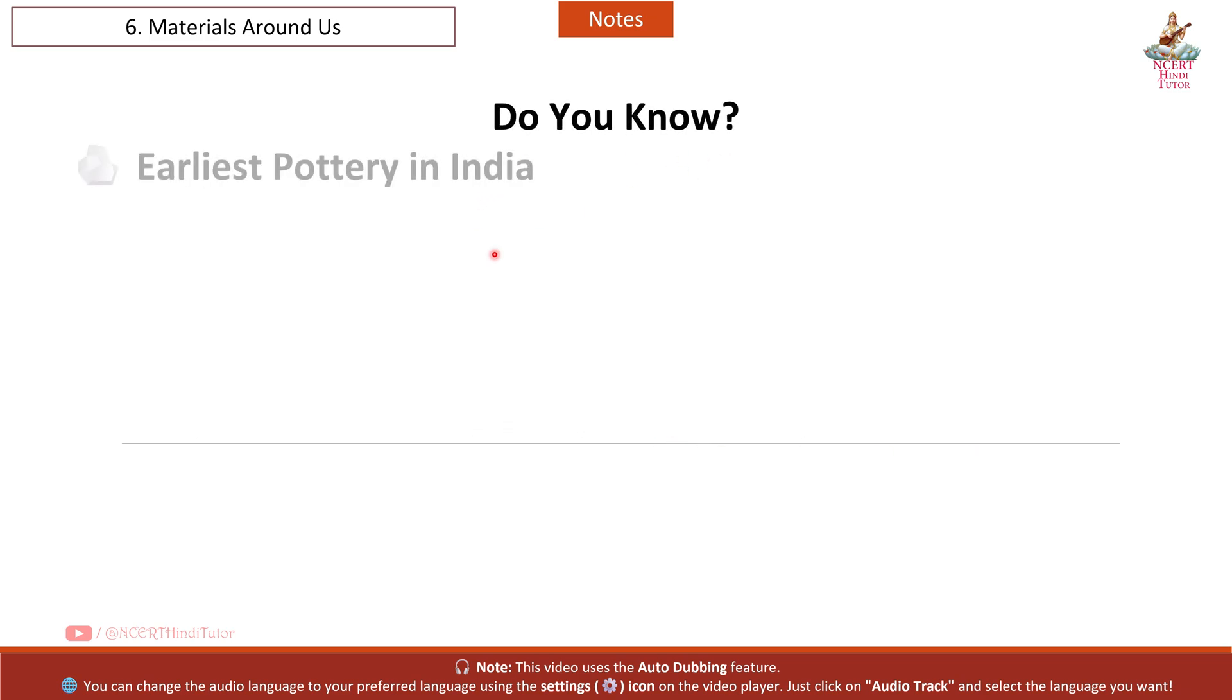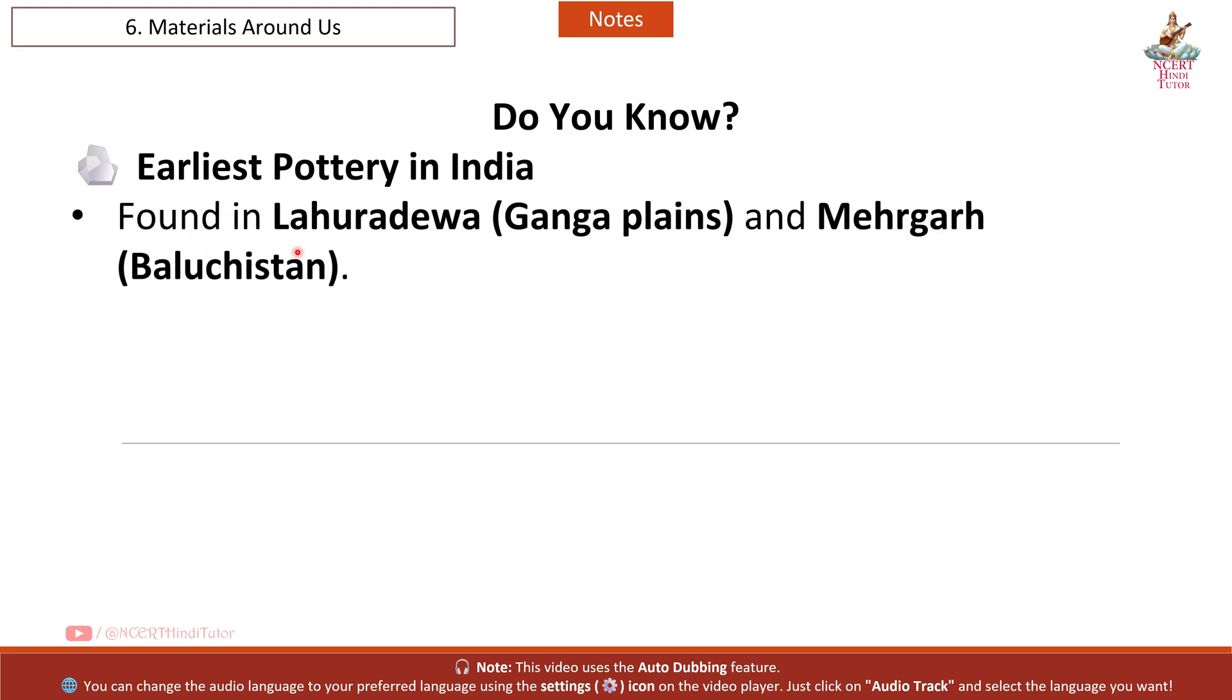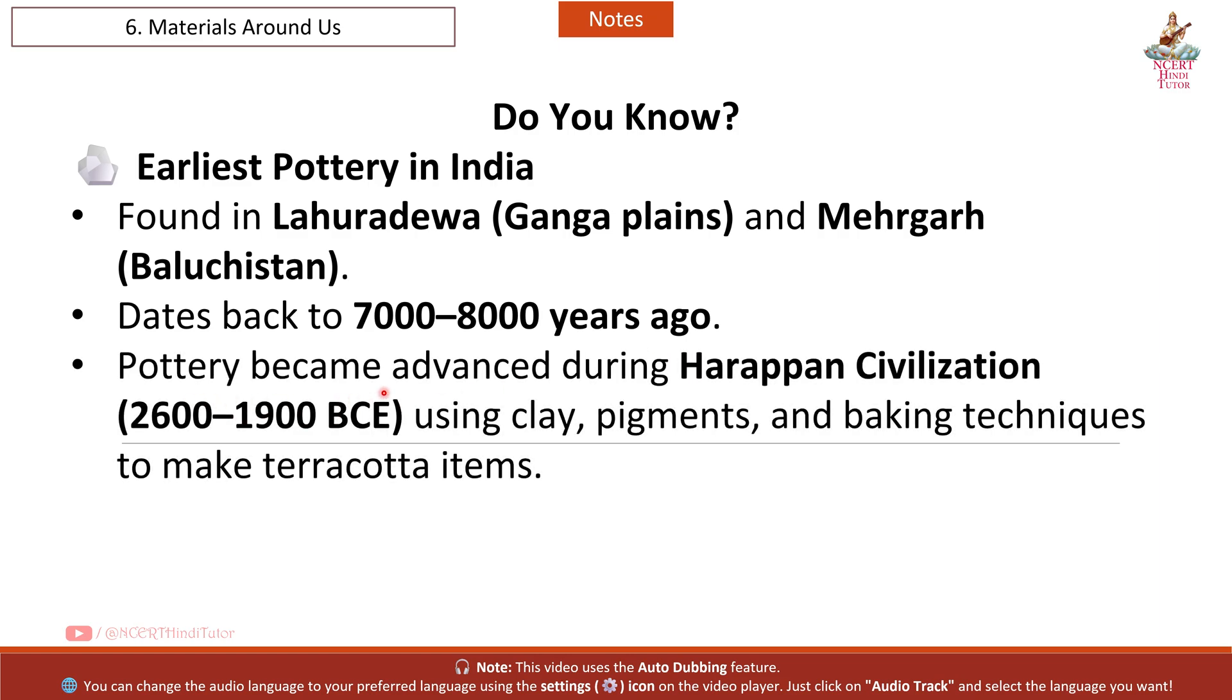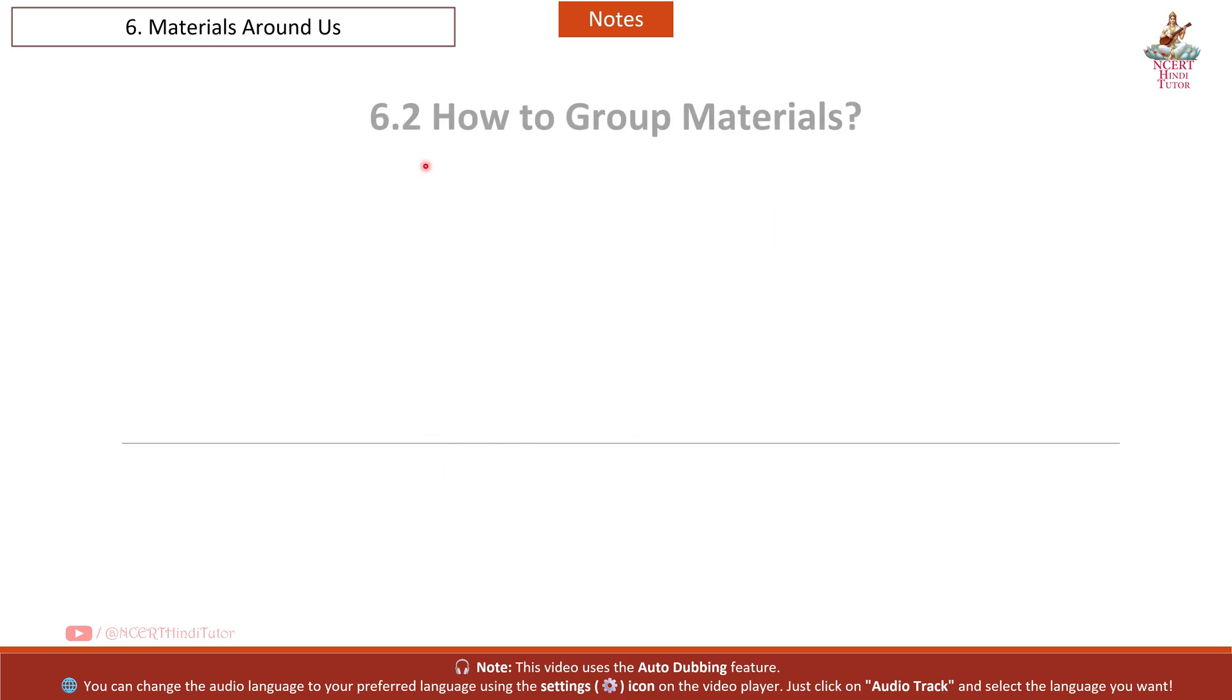Do you know? Earliest pottery in India found in Lahura Deva, Ganga Plains and Mehergat, Balochistan dates back to 7,000 to 8,000 years ago. Pottery became advanced during Harappan Civilization 2600 to 1900 BCE, using clay, pigments and baking techniques to make terracotta items.